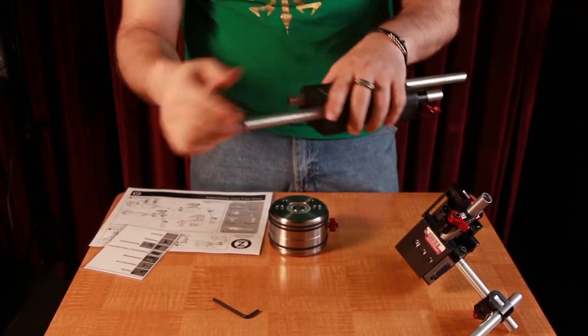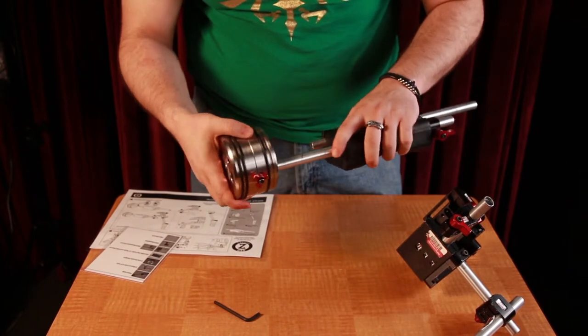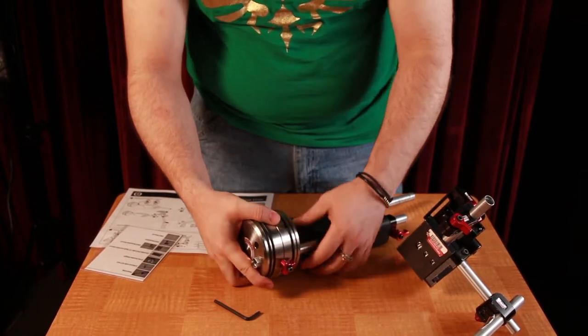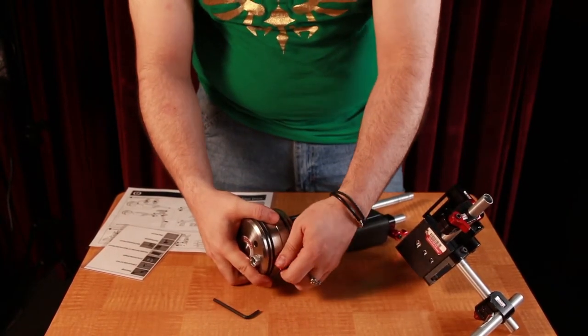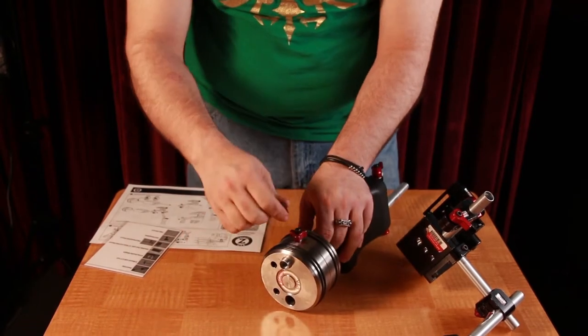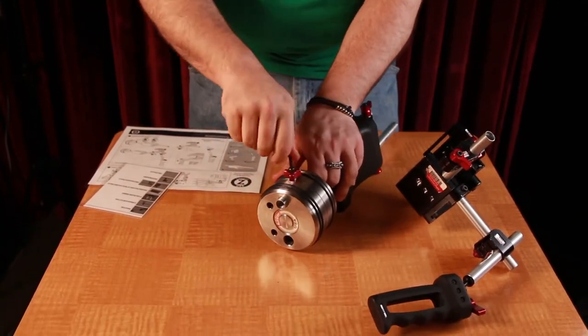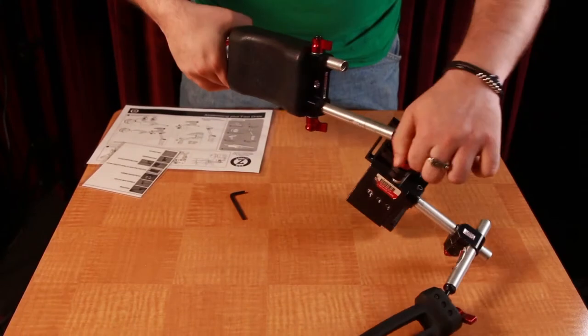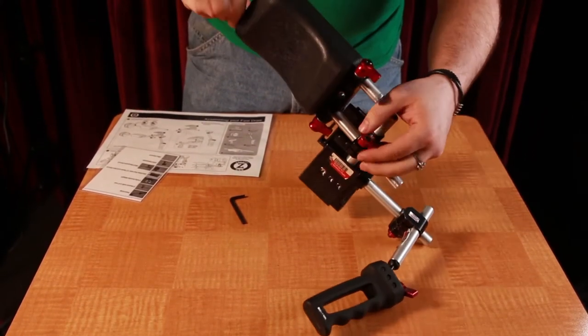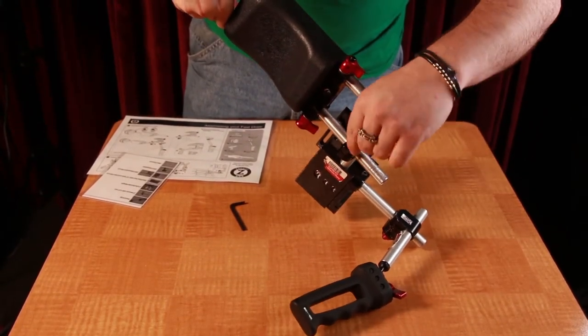To attach the double weight, slide it on the longer rod on the side without the mini mount and tighten. With the shoulder pad and grip facing like so, slide the longer rod into the mount and tighten.